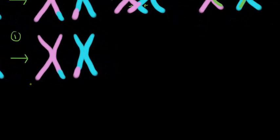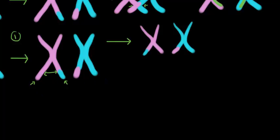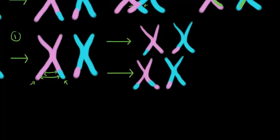Let's say that these two chromatids now cross over. That can happen in a few different ways. Maybe they cross over exactly at this spot over here, and in that case we're going to get a set of chromosomes that looks like that. Or maybe they cross over at a spot somewhere over there, and then we'd get a set of chromosomes that looks like that. That was our second crossing over — so we just described something called a three-strand double crossover.